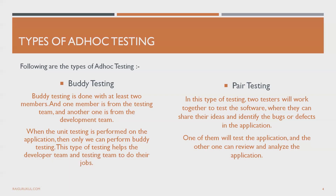For example, they check one-on-one calling, adding multiple persons into the same call, checking video quality in one-on-one and conference calls. These are all covered in buddy testing. Buddy testing can only be performed after unit testing has been completed on the application, and it helps both the developer team and the testing team to do their jobs effectively.